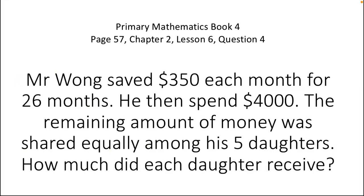This video is linked to word problems and we are doing question number four from Oxford New Syllabus Primary Mathematics Book 4, page number 57, chapter number two, lesson six. Let's read the question: Mr. Won saves 350 dollars each month for 26 months. He then spent four thousand dollars. The remaining amount of money was shared equally among his five daughters. How much did each daughter receive?